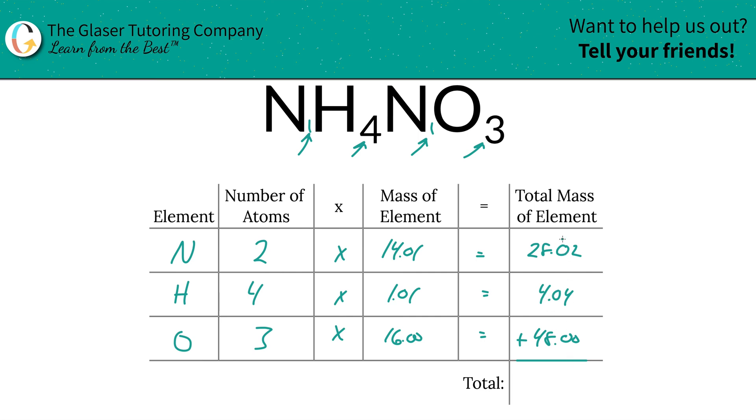To find the total mass of the compound, we're literally just going to add this column up. The total mass of this whole thing is going to be 80.06, and that's grams per mole because we're finding the molar mass. So now you know the molar mass of ammonium nitrate.